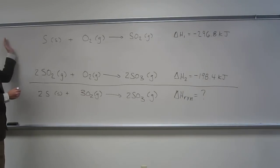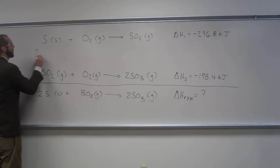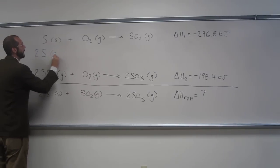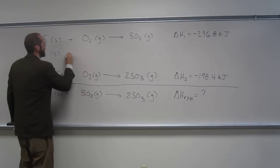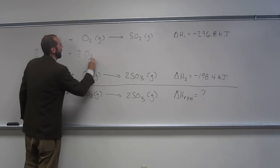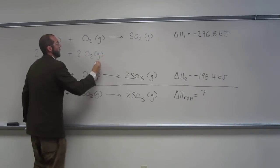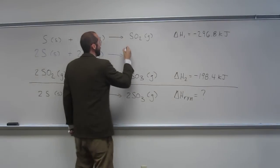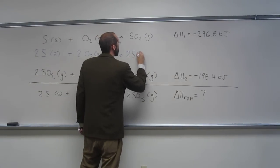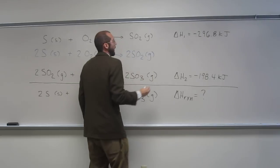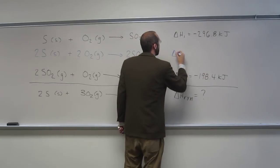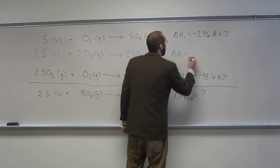So when we multiply the reactions, just like a mathematical equation, we have to multiply it all the way through. So we've got now two S solid, we multiply by two, plus two O2 gas goes to two SO2 gas. And that gives us a new ΔH1.